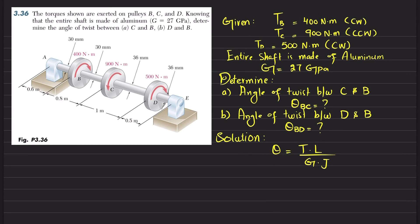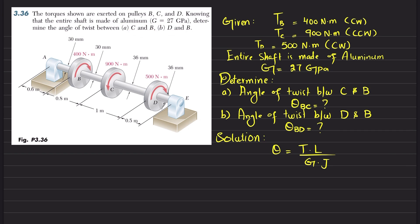Welcome back. Problem 3.36. The statement of the problem is: the torques shown are exerted on pulleys B, C, and D. The torque on pulley B is 400 Newton-meters clockwise, on C it is counterclockwise 900 Newton-meters, and at D there is a 500 Newton-meter clockwise torque.